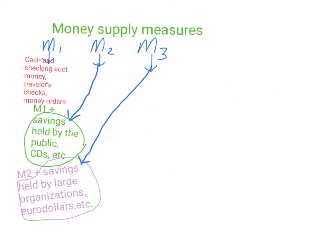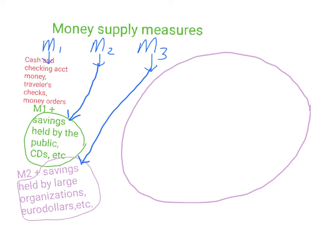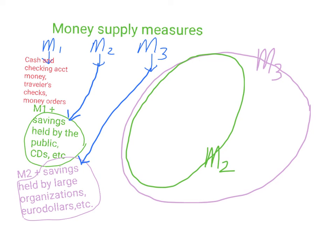If we were to visualize M1, M2, and M3 by their sizes, we know that M3 has the most amount of money because it includes M2, which includes M1. So M3 can be graphed by this large circle here — we'll call this M3. M2 is part of M3, so M2 is inside of M3. And M1 is inside of both of these two, so you can think of M1 as being right there in the center.